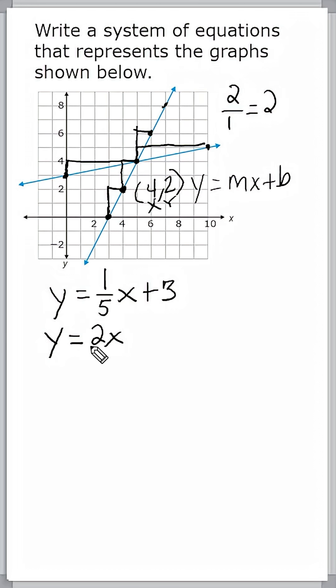So what we can do is plug this y, which is 2 in for y, equals our slope of 2 multiplied by this x, which is 4, and then solve for b.